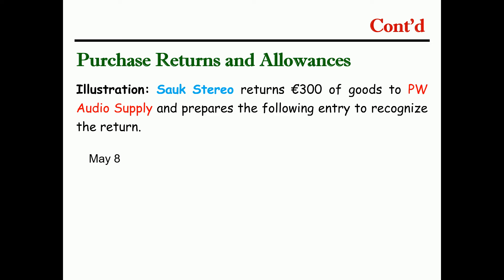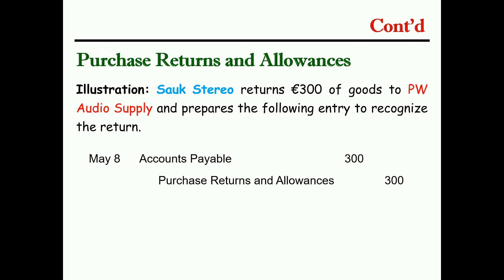Assume that the store is returning $300 of goods to PW. If you have a purchase return, you will need to record a purchase return and allowance. In the periodic system, you debit accounts payable and credit purchase returns and allowances.